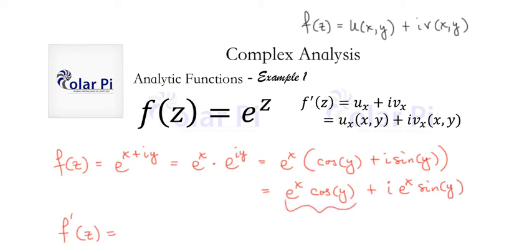we see that cosine y is going to be a constant and the derivative of e to the x is just e to the x. So we get that ux, this guy, is just e to the x cosine y.